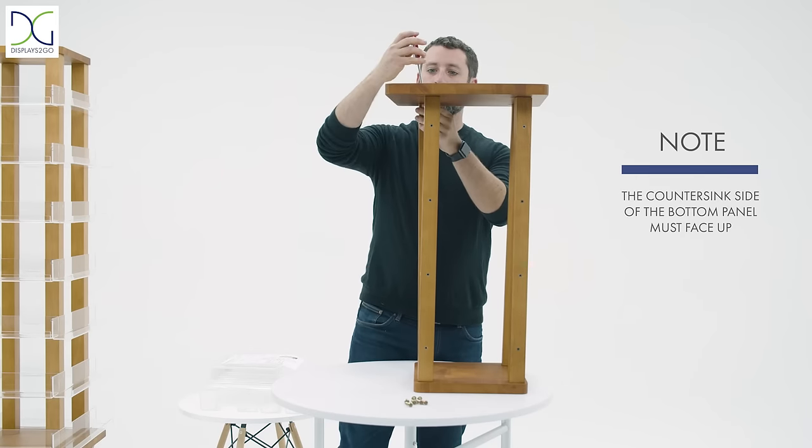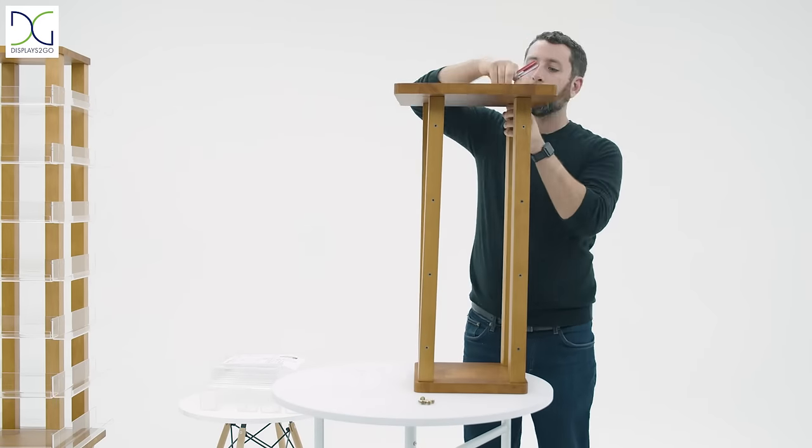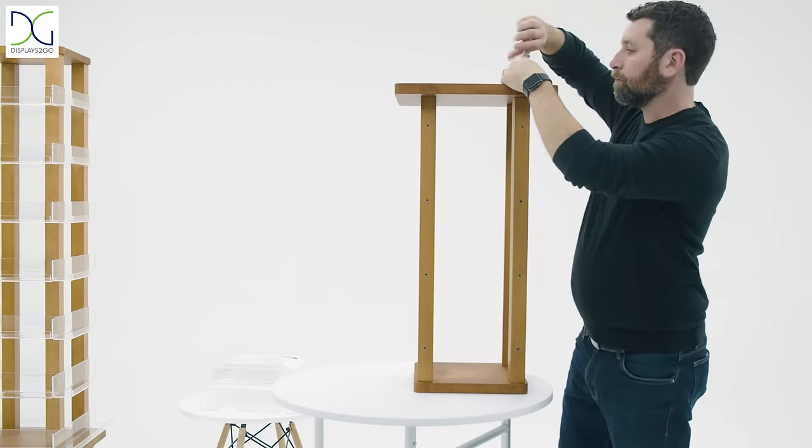Note, the countersink side of the bottom panel must face up. Keep the assembled frame in the current position until step 4 is finished.